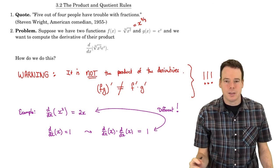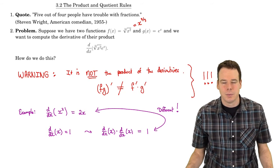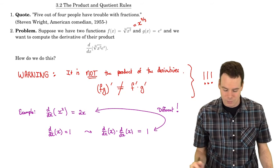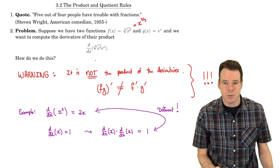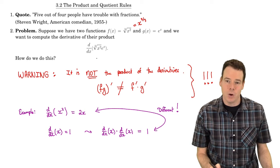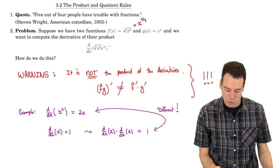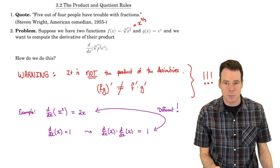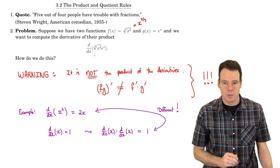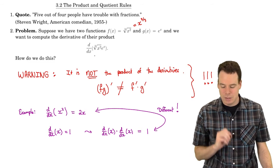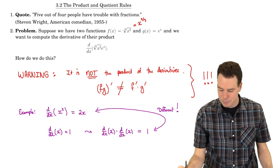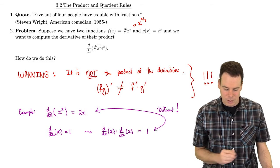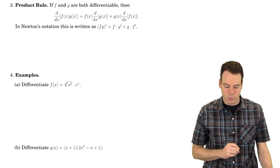So what is the derivative of a product of two functions? Is there any hope — can we reconstruct it from the individual derivatives? It turns out yes, there is hope, and it's known as the product rule.